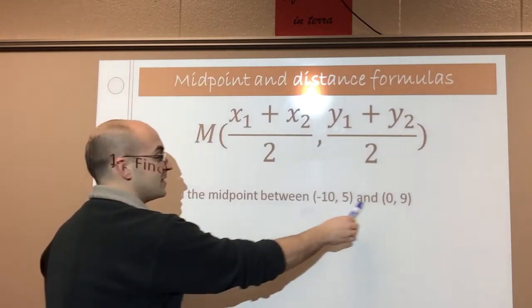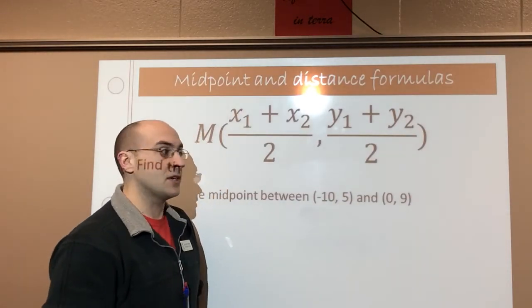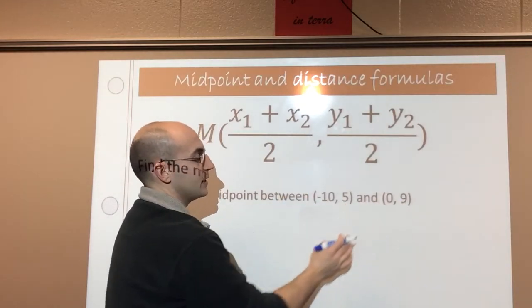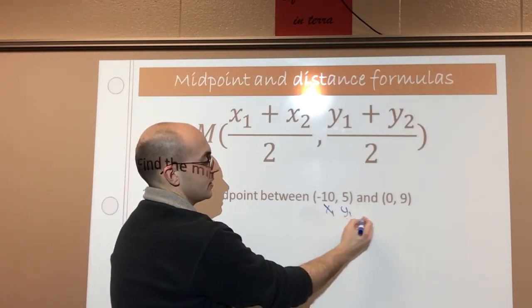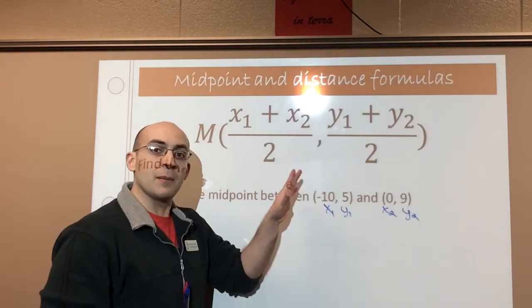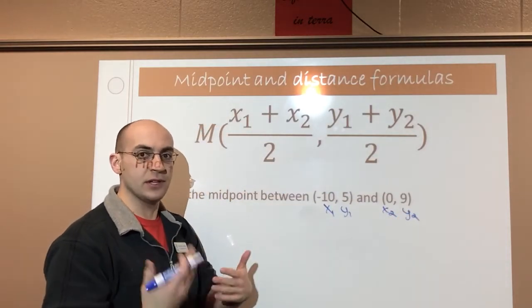So to find a midpoint, I first need a couple of endpoints. I'm going to start my line at negative 10 comma 5 and go to 0 comma 9. Now, I want to label these points. It just makes your life a lot easier. Now I'm able to just simply substitute the numbers in where I need them and then solve the equation that way.